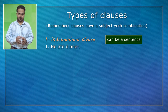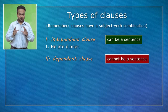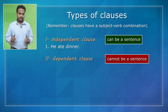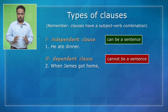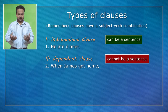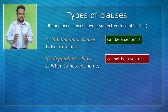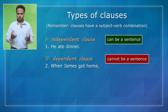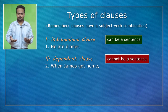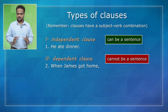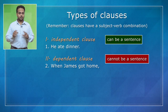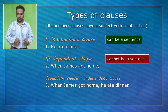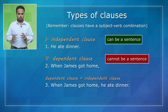So what's a dependent clause? Well, it's a clause — it has a subject-verb combination — but it cannot be a sentence by itself. For example, 'when James got home' is a dependent clause. It has a subject, 'James,' and a verb, 'got.' But if you think about it, it's not a complete sentence, because if I said 'when James got home,' you would ask: then what? What happened? So the sentence isn't complete — this is a dependent clause. To make it a full sentence, you have to combine it with an independent clause, such as: 'When James got home, he ate dinner.'